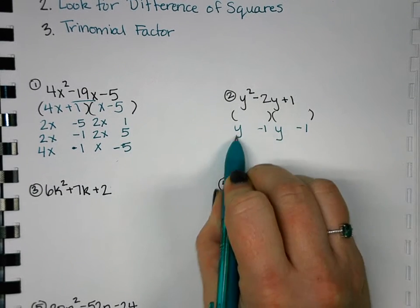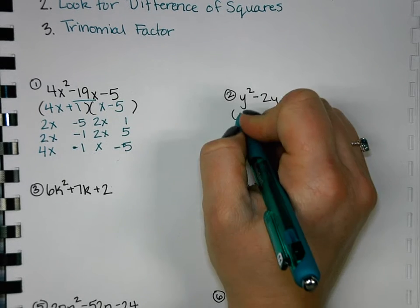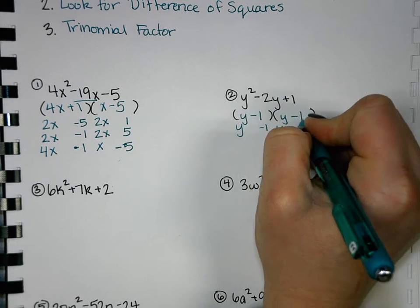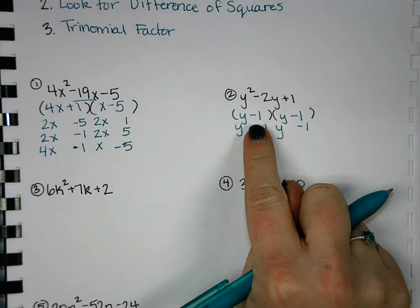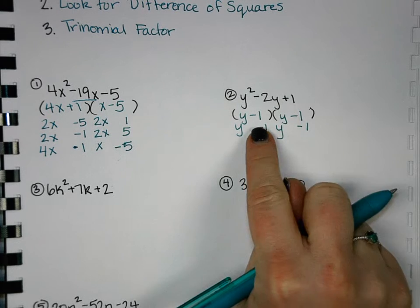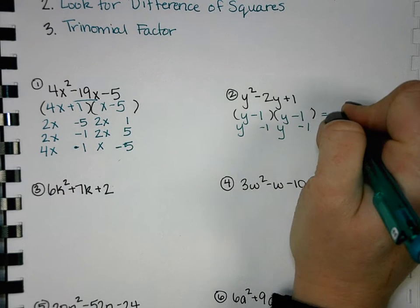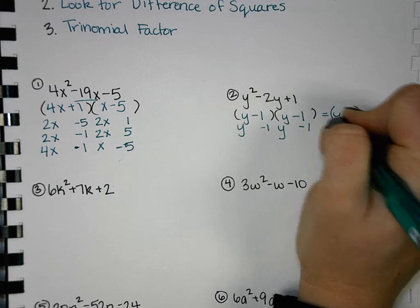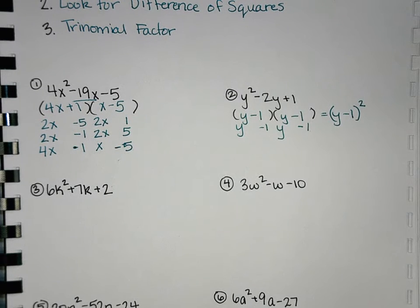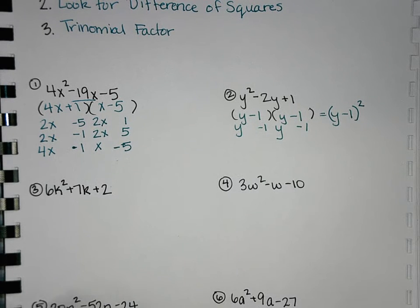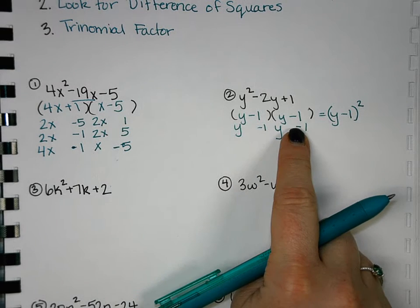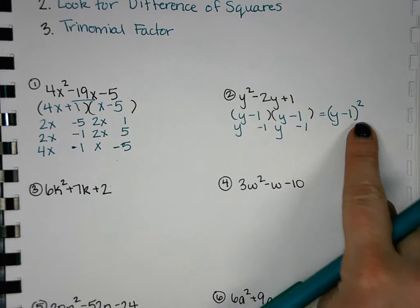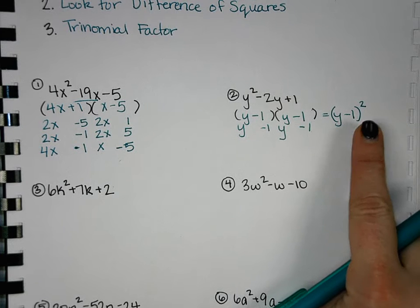So we have negative 1 plus negative 1 will give us negative 2. So y minus 1, y minus 1. If you ever get an answer like this where you have the same thing in both binomials, you can write it as y minus 1 squared. So just like how when we multiplied these we separated, if you get the same thing twice you can combine it to be this. If you left at y minus 1 times y minus 1, I'd still give you full credit. So don't feel like you have to remember that step, but if you do it's a good thing.